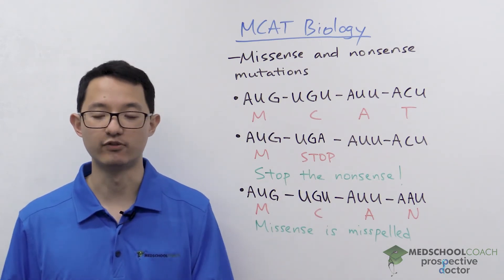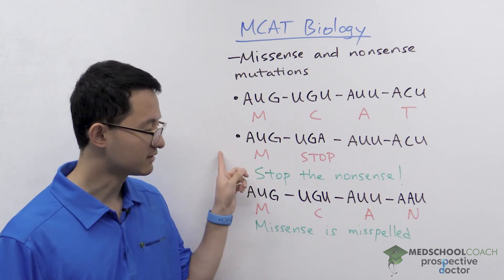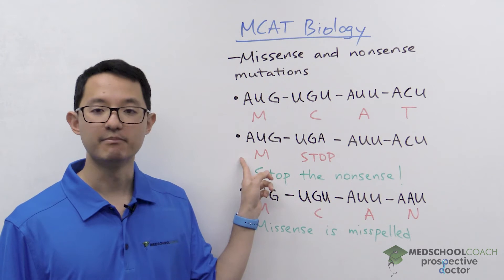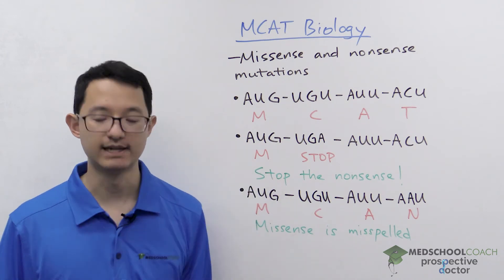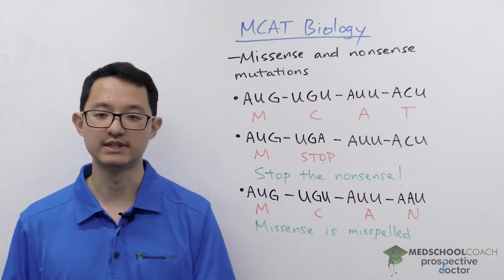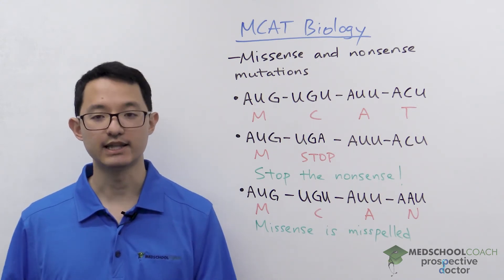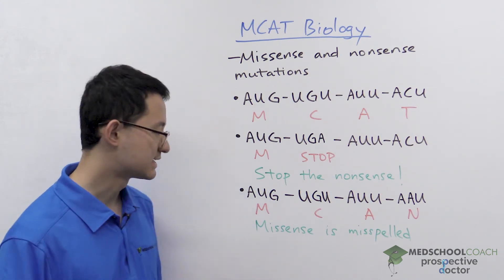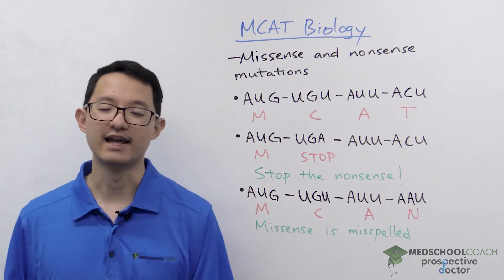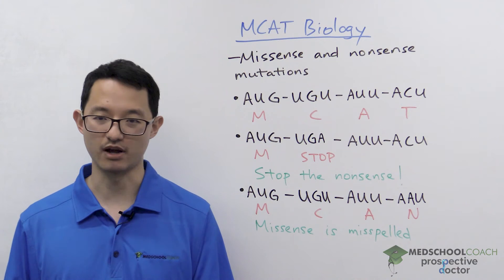UGA does not encode for an amino acid. So during translation, instead of producing four amino acids, you're only going to produce methionine. Essentially, the nonsense mutation has resulted in a premature stop codon. The mnemonic for memorizing this is "stop the nonsense" — nonsense mutations produce a premature stop codon.